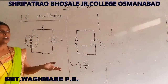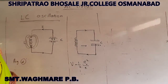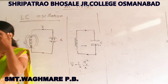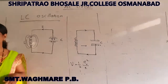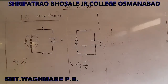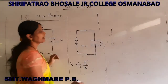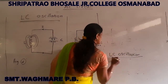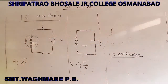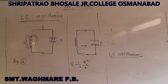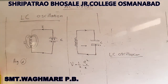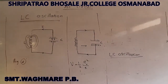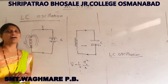These oscillations are created in the LC circuit and therefore have a definite frequency of oscillation. These are called LC oscillations. There is no loss of energy in ideal LC oscillations, and the amplitude of oscillations remains constant, meaning the oscillations are undamped.